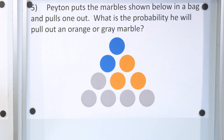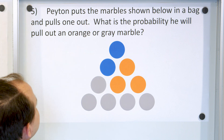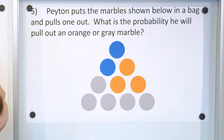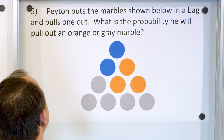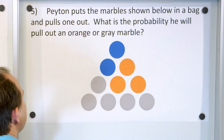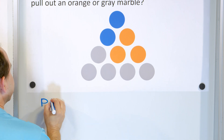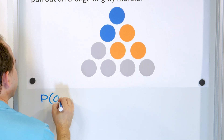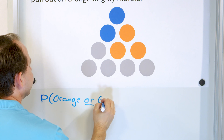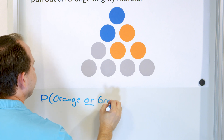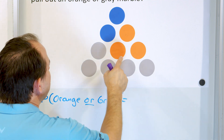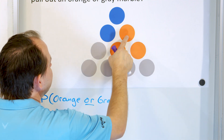Peyton puts marbles in a bag and pulls one out. What's the probability he will pull out an orange or gray marble? We have to figure out how many ways we can get orange or gray. Counting them up, there are eight marbles that are orange or gray.